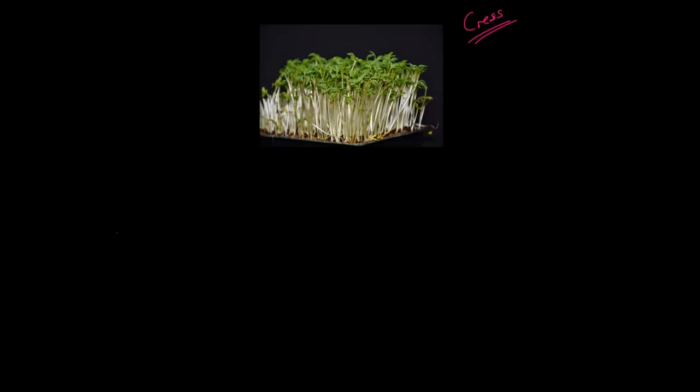You'll probably get five cress seeds here, five cress seeds here, and five cress seeds over that way. You'll grow some in a light condition — they will germinate, which is really the proper word. They will sprout and grow, and you'll leave them for a couple of days. They'll grow little leaves on top, and then you can get your rulers and measure their growth.